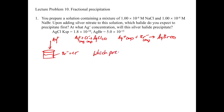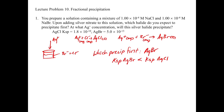We can answer easily which precipitates first: based on what we discussed, the one with the lower KSP precipitates first. The correct answer is AgBr, because KSP(AgBr) < KSP(AgCl). This means silver is less soluble in the presence of bromide, so we hit Q = KSP sooner with silver bromide than with silver chloride.